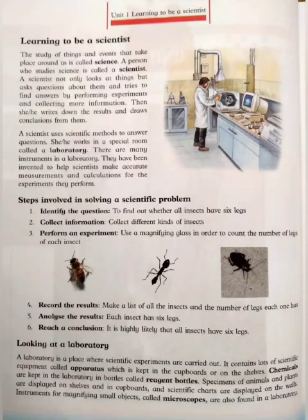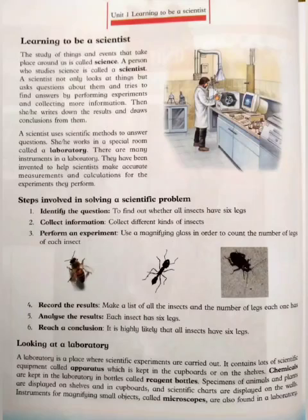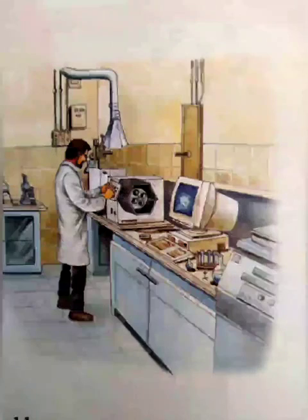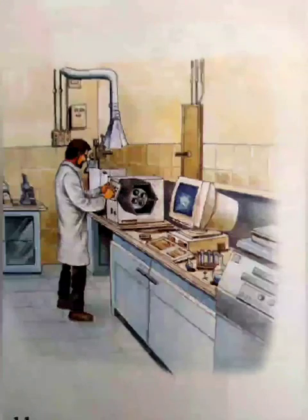Scientists کسے کہتے ہیں؟ A person who studies science is called a scientist. یعنی students، آپ کو بتایا گیا تھا کہ وہ انسان جو science کے بارے میں study کرتا ہے، science کے بارے میں جانتا ہے، اسے scientist کہتے ہیں۔ Learning to be a Scientist میں آپ نے دیکھا تھا کہ ایسی چیزیں اور events جو ہمارے around میں ہوتی ہیں ان کے بارے میں study کرنا science کہلاتا ہے، اور اس science کے بارے میں جو لوگ study کرتے ہیں وہ scientist کہلاتے ہیں۔